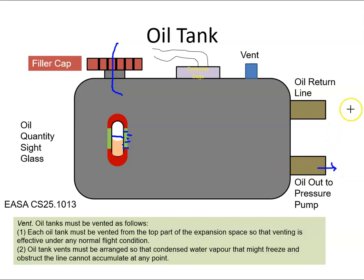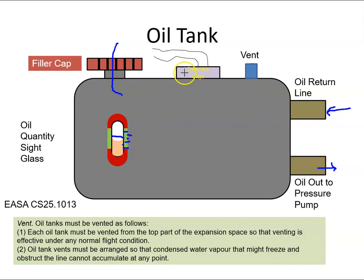There is an oil outlet line which supplies oil to the pressure pump, and an oil return line for oil coming back from the scavenge system into the tank. There is also a contents gauge with an electrical connection — perhaps a capacitive-type gauge — that indicates the oil quantity in the cockpit.